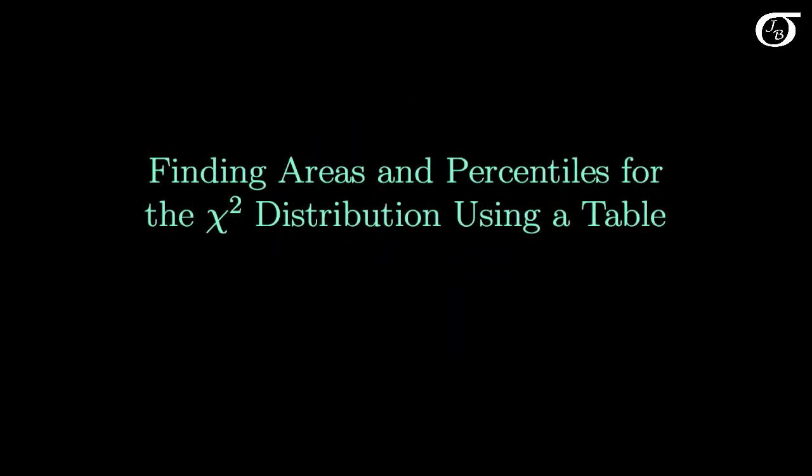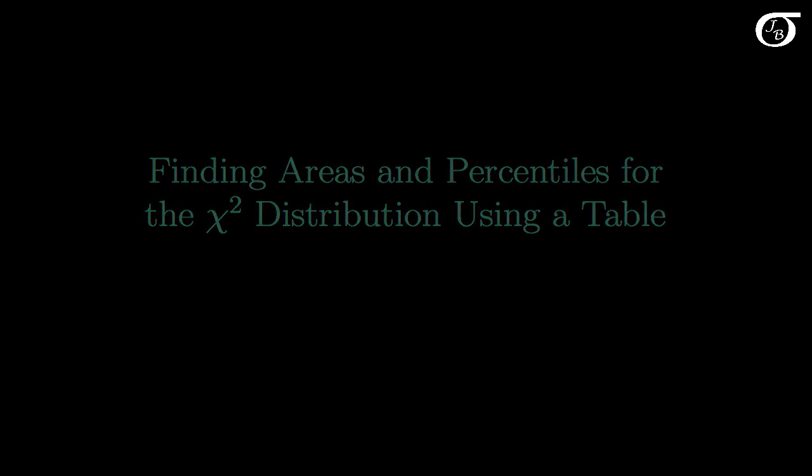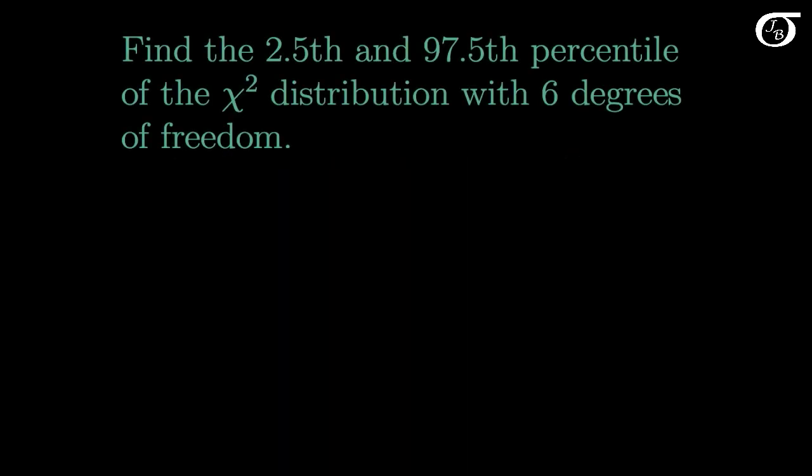Let's look at finding areas and percentiles for the chi-square distribution using a table. Let's jump right to it and find the 2½ and 97½ percentile of the chi-square distribution with 6 degrees of freedom.